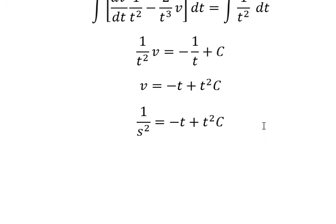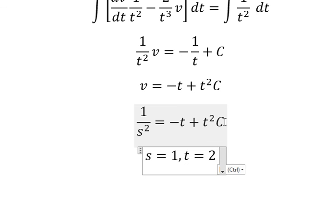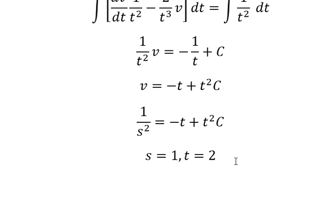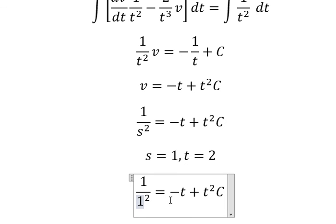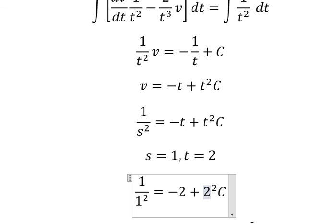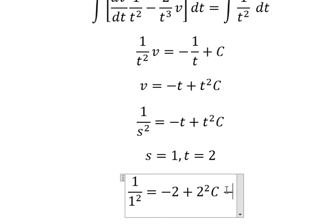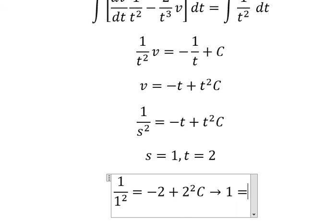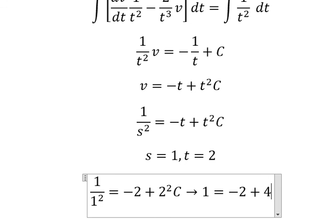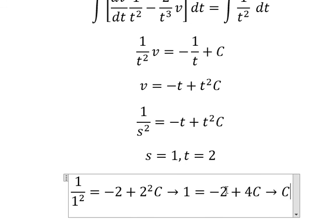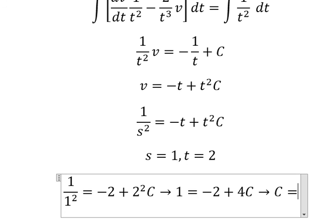We put s equal to 1 and t equal to 2 to find the constant c. Substituting these values in, we get 1 equals negative 2 plus 4c. Solving for c gives us c equals 3 over 4.